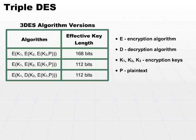Let's take a look at the chart. The first version of Triple DES has an effective key length of 168 bits because it uses three separate keys. The second and third versions each have an effective key length of 112 bits. So the first one has effectively a longer key, but the strength is equivalent among all three versions.